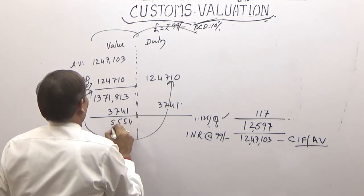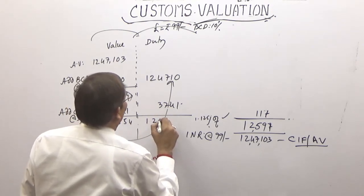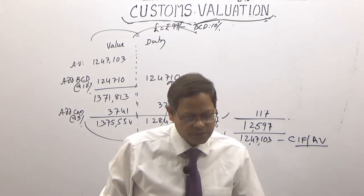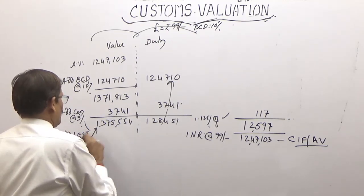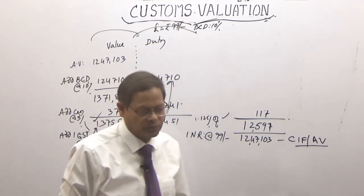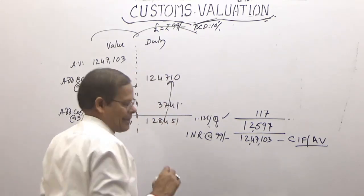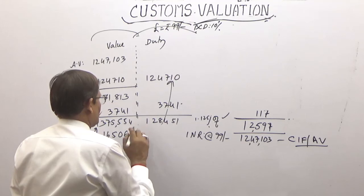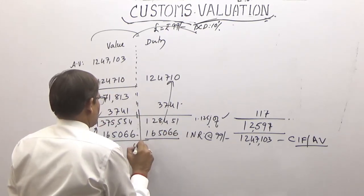Add IGST at 12% on the total of assessable value plus BCD plus cess: that value is ₹13,75,554, and 12% of that is ₹1,65,066 (or ₹1,65,067 — one rupee difference due to rounding). Add all totals to get the final duty payable.